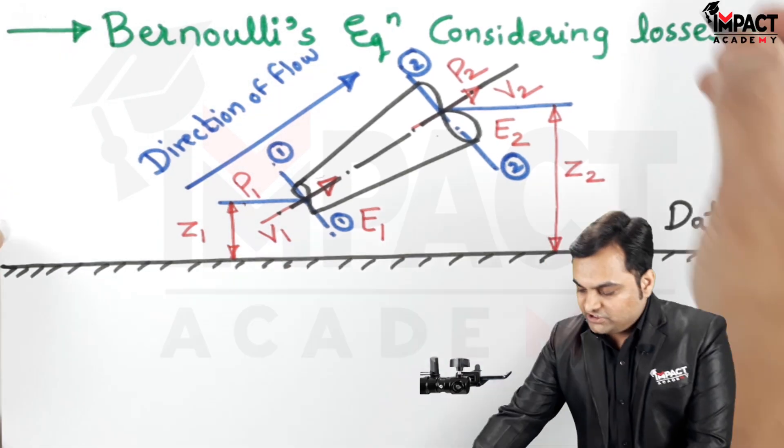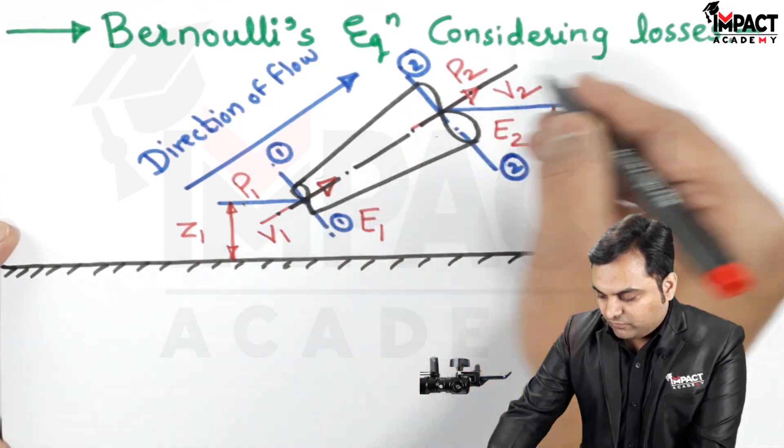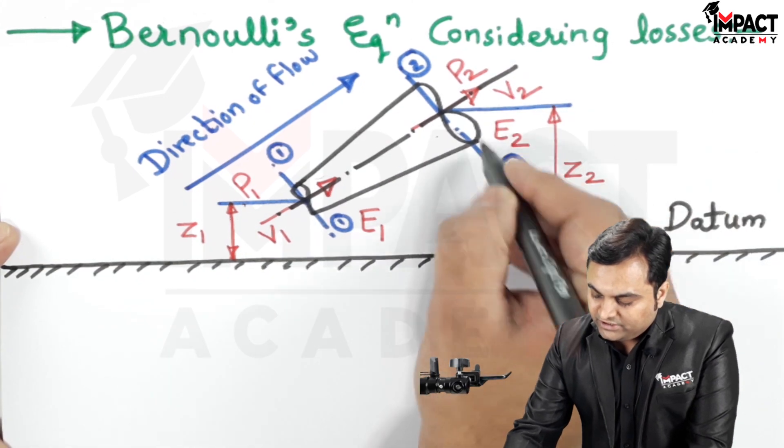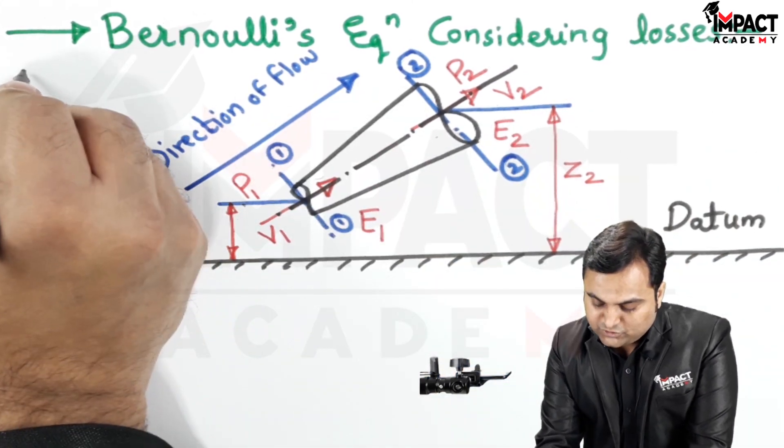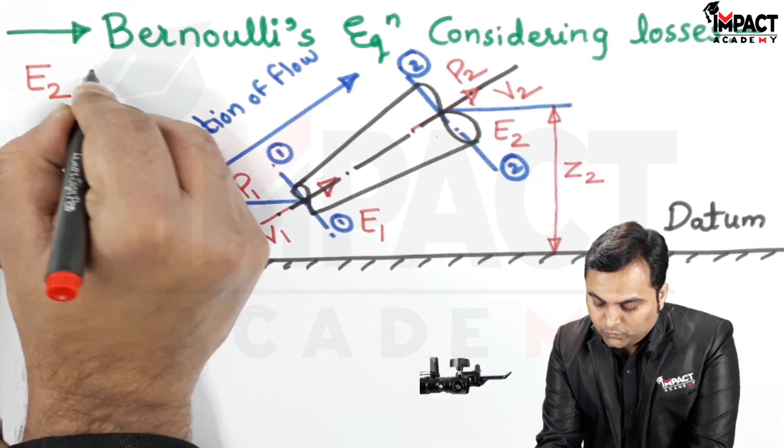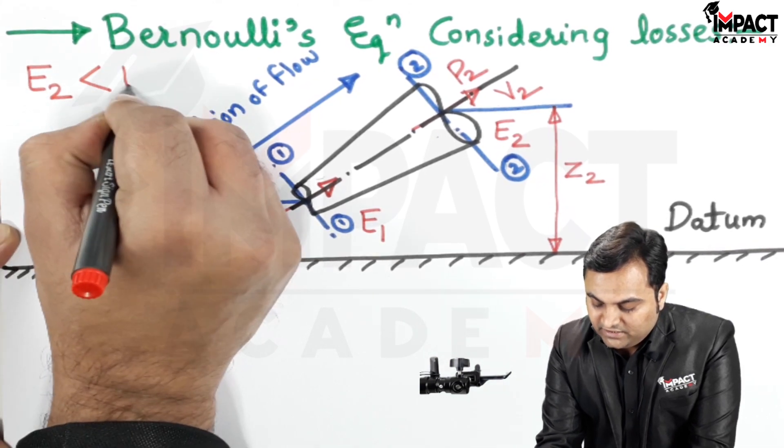So losses means when the fluid is flowing from one section to other, then at section 2 the energy would be less. It means there is drop in energy, so E2 value would be less than E1 value.